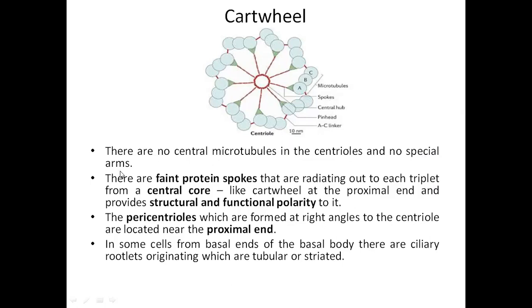Special arms connecting microtubular units are absent in the centrosome as well, but instead of prominent spoke-like structures, in the centrosome we can see faint protein spokes that form the central core giving a cartwheel kind of structure, forming the proximal end. This cartwheel organization provides structural and functional polarity to the centrosome. At the proximal end of the mother centriole we can see the daughter centriole or pericentrioles.